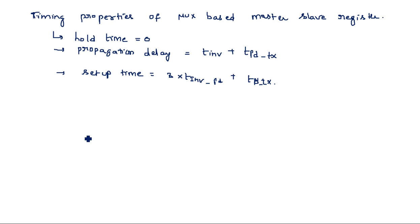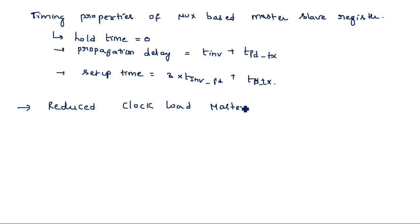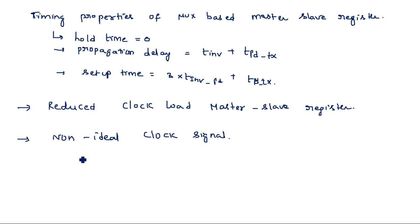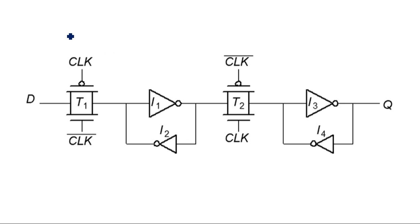Next we are going to see the reduced clock load master-slave register, continued with respect to the reverse conduction possibility. We will also cover the non-ideal clock signal, avoiding clock overlap, and the circuit to generate a two-phase non-overlapping clock.